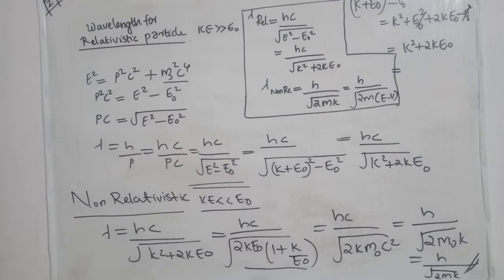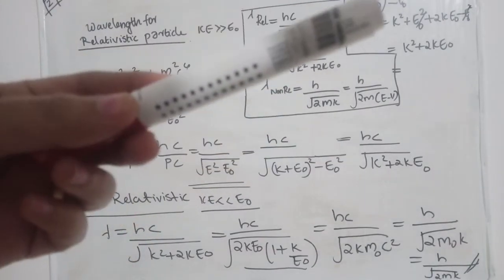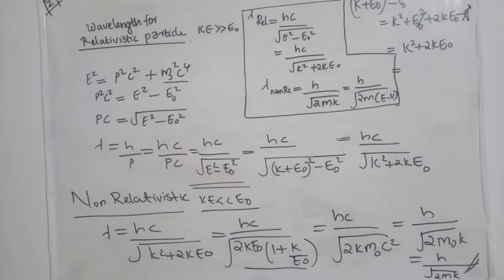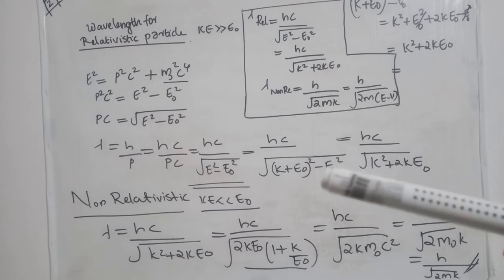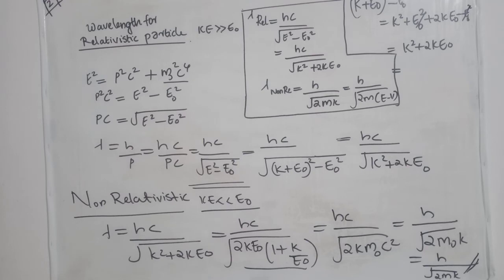We can also substitute E = K + E₀, where K is kinetic energy and E₀ is rest mass energy. Expanding (K + E₀)² gives K² + E₀² + 2KE₀. Subtracting E₀² leaves K² + 2KE₀. So we have two expressions for the relativistic wavelength: lambda = Hc / √(E² - E₀²), and lambda = Hc / √(K² + 2KE₀).